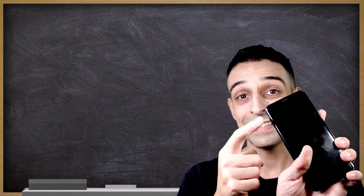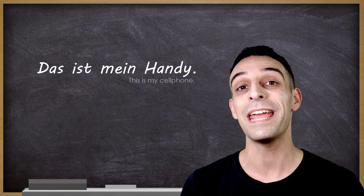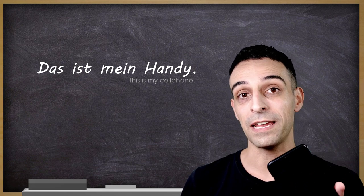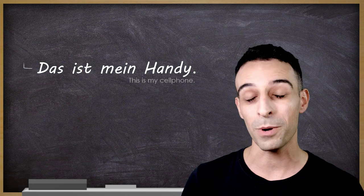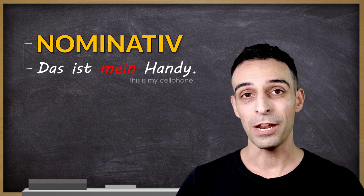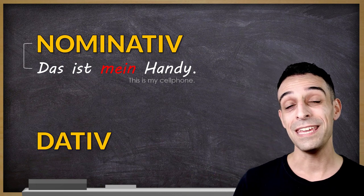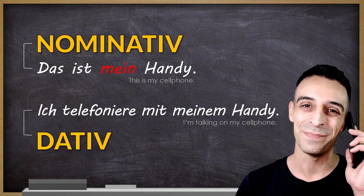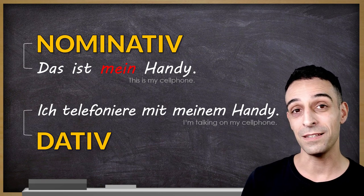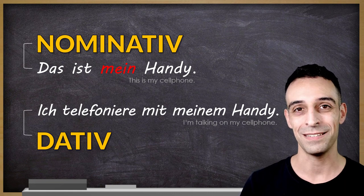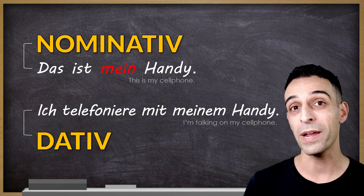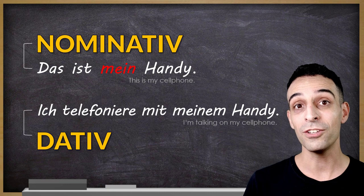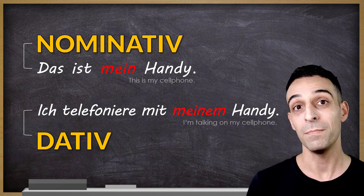Das ist mein Handy. In this sentence, das Handy is the subject and this is why we have to use nominative: mein. Here is dative: Ich telefoniere mit meinem Handy. I use the preposition mit, and this preposition always requires dative case. You can see that the possessive article already changed into meinem.